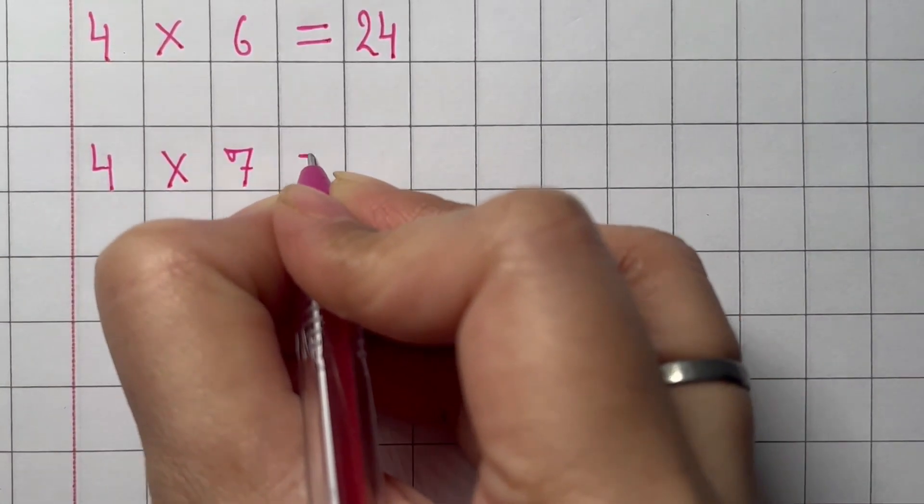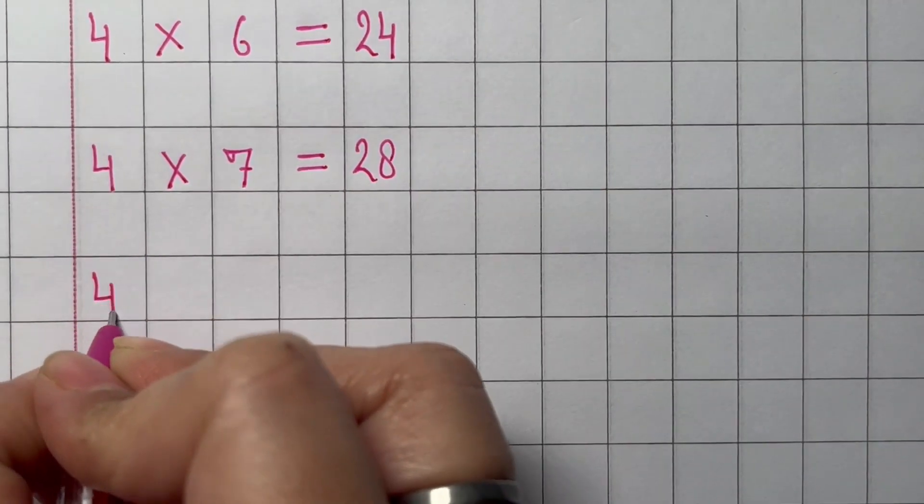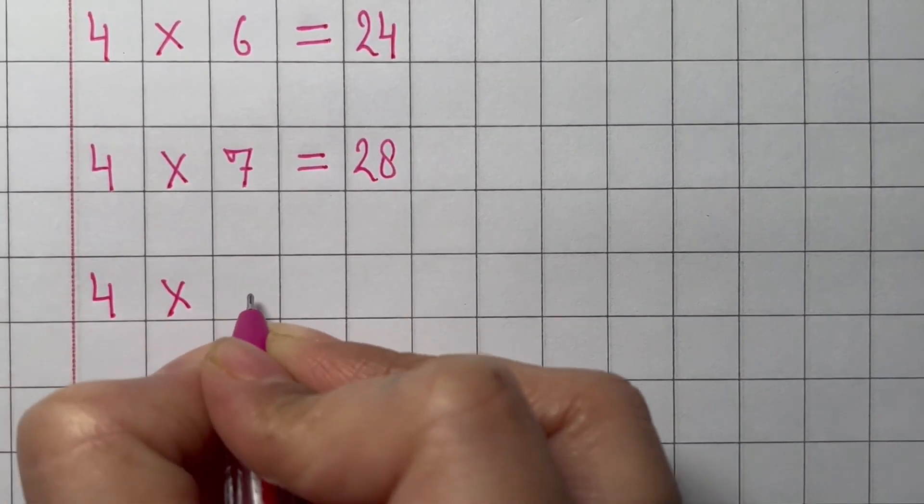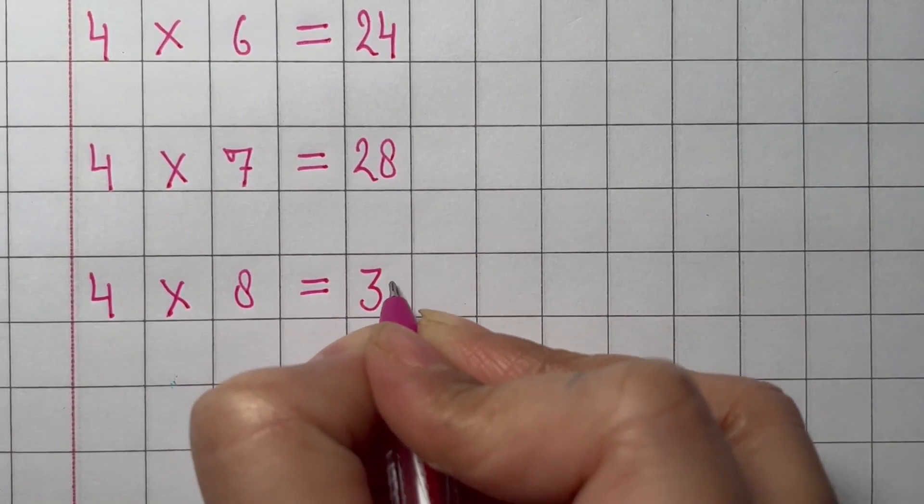Seven times 4 equals 28. Eight times 4 equals 32.